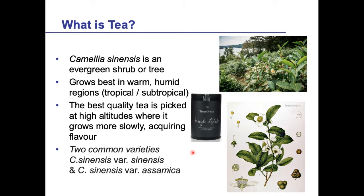Tea originated in the eastern Himalayas and it grows best in warm, humid regions — generally tropical or subtropical. Having said that, it can grow in a remarkable variety of places, including Cornwall in the west of England. This picture here is from the Tregothnan estate in Cornwall. There's only 11 grams of tea leaves in this little can, so they don't grow much, but you can grow tea in other places. The best quality tea is picked at higher altitudes. There are four common varieties, but the two most common are Sinensis and Assamica — 'Assamica' giving a hint that tea also grows in India, in the region of Assam.